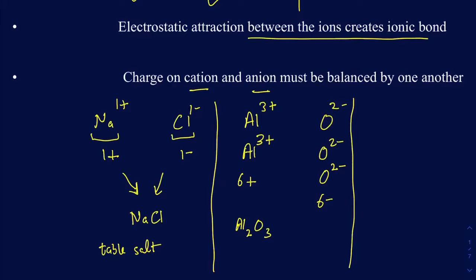Another shortcut: the charge on the cation becomes the subscript of the anion, and the charge on the anion becomes the subscript of the cation. So if you have Al³⁺ and O²⁻, this 3 goes onto the subscript of oxygen and this 2 goes onto the subscript of aluminum. This works almost 99% of the time.